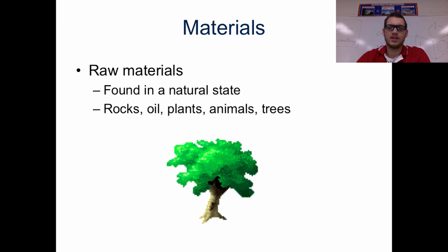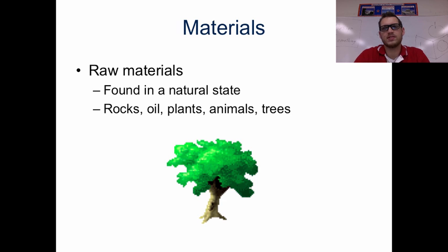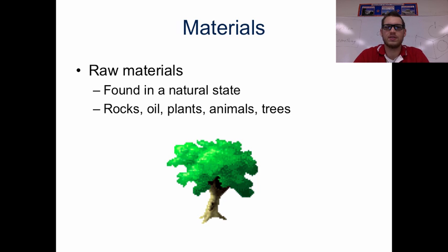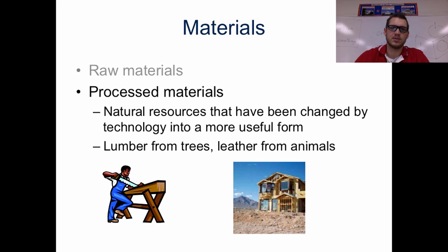Materials. These come in different states. Let's talk about raw materials — we think of a raw material as something that's found in nature. Trees come to mind. When we look outside, we see dirt, we see plants. There are different types of dirt, different types of rock, oil, plants, trees. So those are going to be our raw materials.